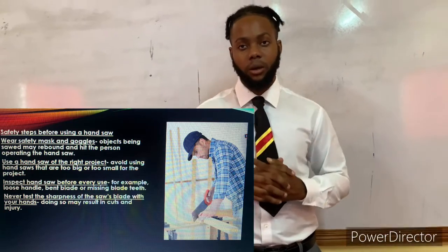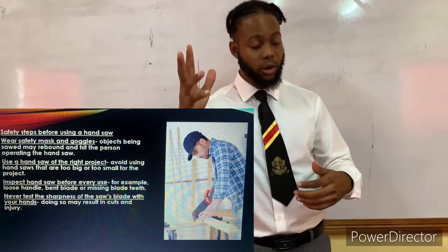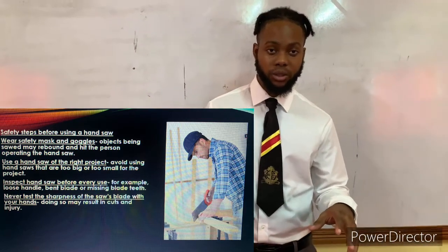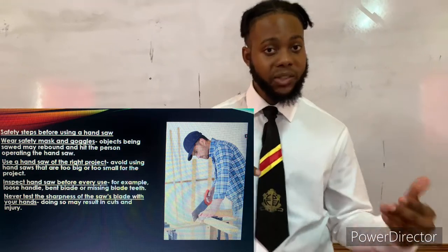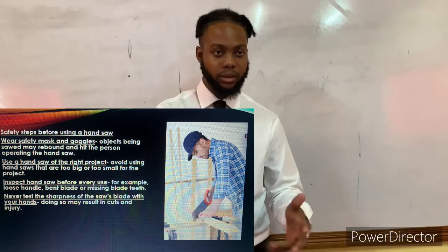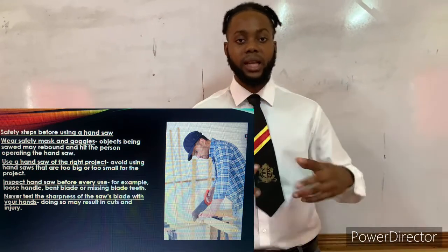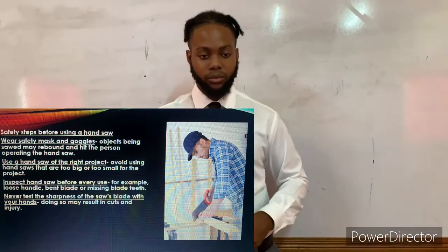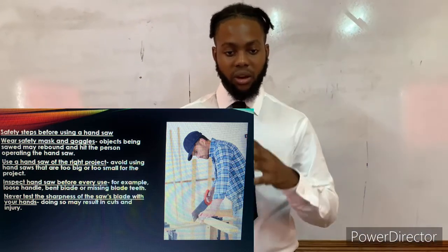Wear safety masks and goggles because objects being sawed may rebound and hit the person operating the hand saw. When we bend over to saw a board with a back-and-forward motion, the wood may have knots or defects that cause it to split quickly, and pieces of wood can fly up — either onto your hand or your face. That's why we always wear appropriate clothing, a face mask, and goggles.